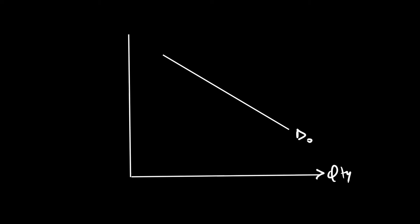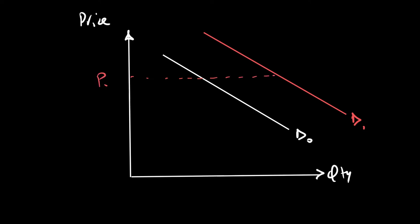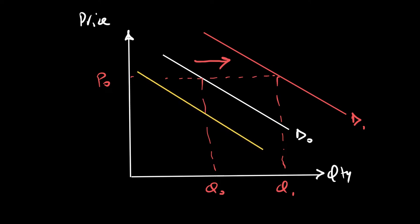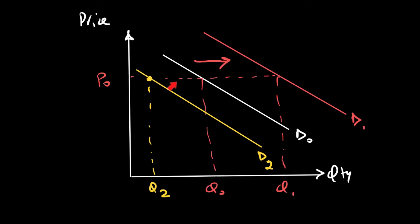Let's stick with the example of cars — this is demand for cars. A non-price factor can make the demand curve shift to the right, which we call a rise in demand. At any given price, say P0, if you were previously buying Q0, you will now buy more — Q1. Similarly, if I want to show a decrease in demand, I shift the demand curve backward. If your demand was initially D0 and now for the same price P0 you are buying Q2, which is less, the demand is going down.